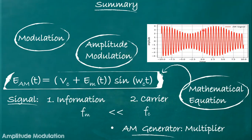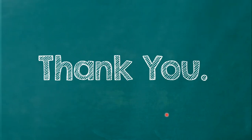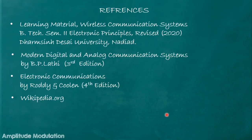In summary, in this video we have learned what is modulation and what is amplitude modulation, its waveform, and its mathematical equation eAM(t) = [Vc + em(t)]·sin(ωc·t). We also covered the two signals: the information or message signal with frequency fm and the carrier signal with frequency fc, including the relation between them. Finally, we learned how to generate the AM wave using a multiplier. Thank you.